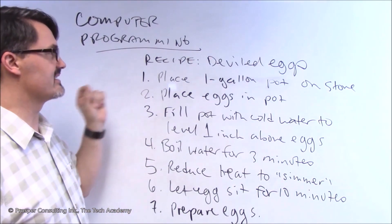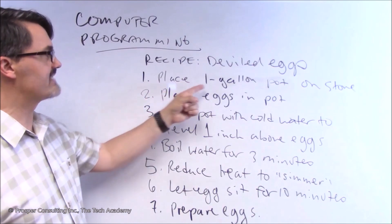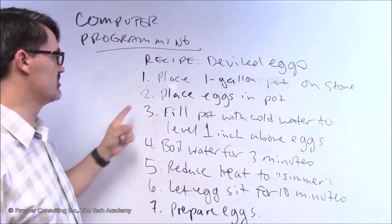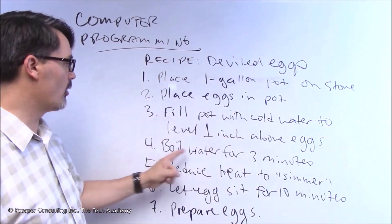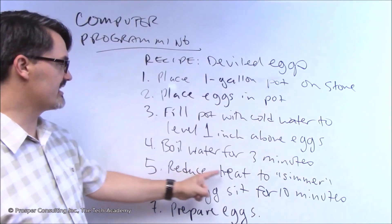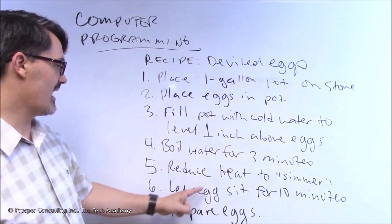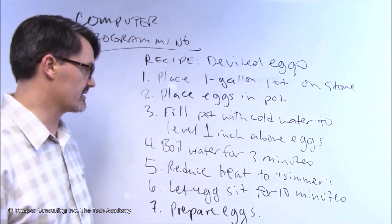So the recipe for deviled eggs in exact order. One, place a one gallon pot on the stove. Two, place eggs in the pot. Three, fill the pot with cold water to a level one inch above the eggs. Four, boil water for three minutes. Five, reduce the heat to simmer. Six, let eggs sit for ten minutes. Seven, prepare the eggs.